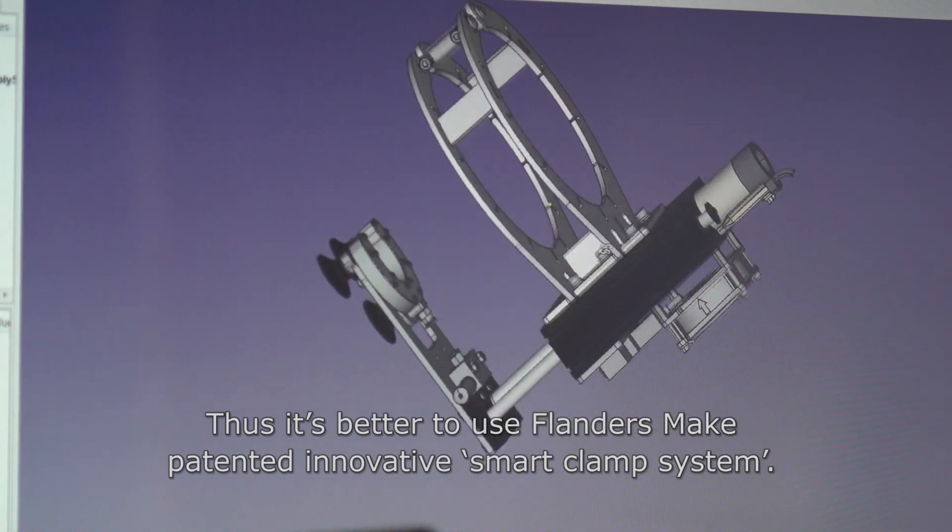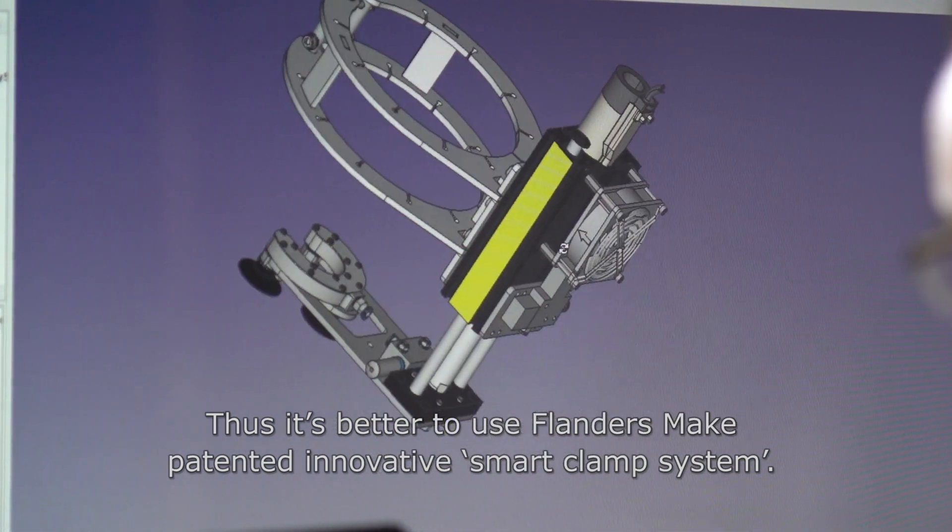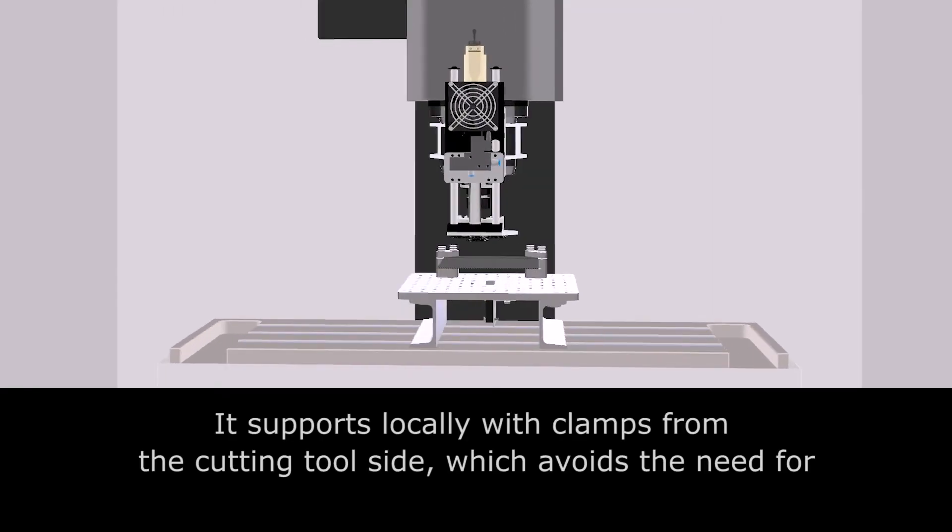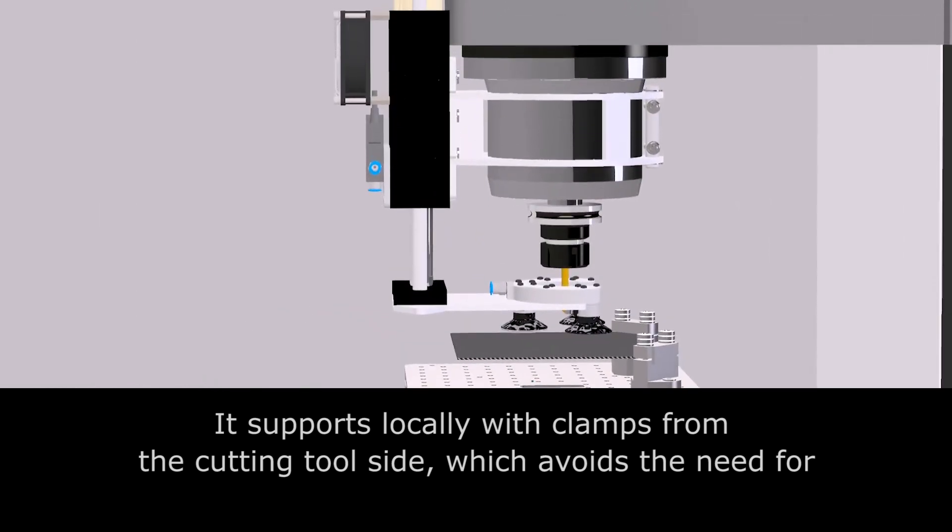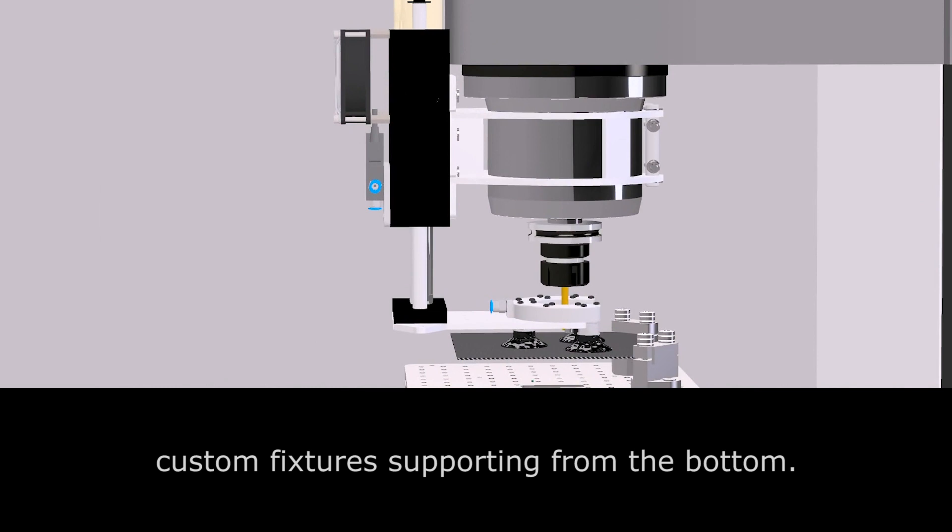Thus, it is better to use Flanders MAKE patented innovative smart clamp system. It supports locally with clamps from the cutting tool side, which avoids the need for custom fixtures supporting from the bottom.